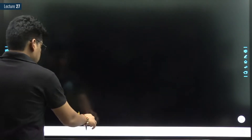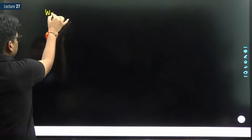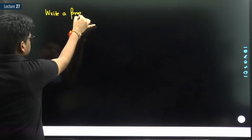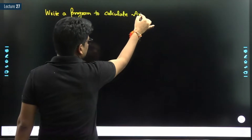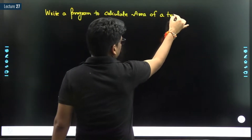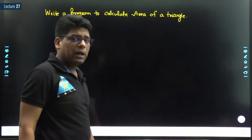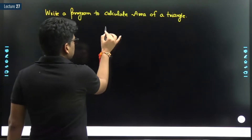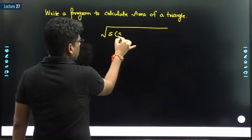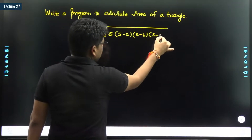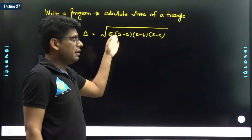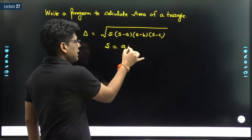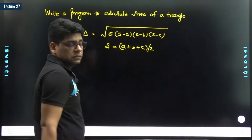We are interested in writing a program to calculate the area of a triangle. There are so many formulas used to find the area of a triangle. For example, one formula is Heron's formula: s(s-a)(s-b)(s-c), where s is the semi-perimeter, that is (a+b+c)/2, and this is used when three sides a, b, and c are given.